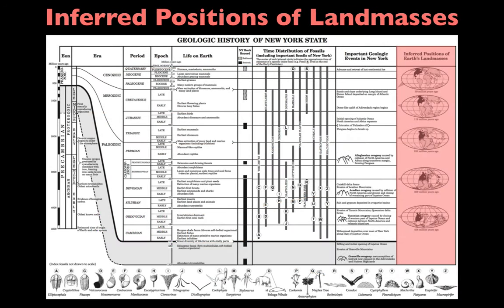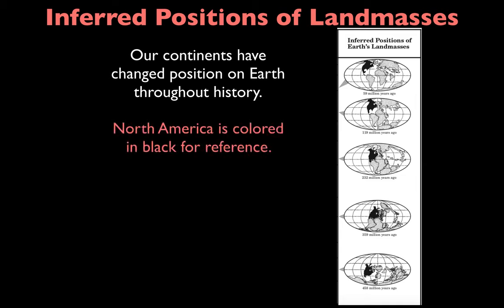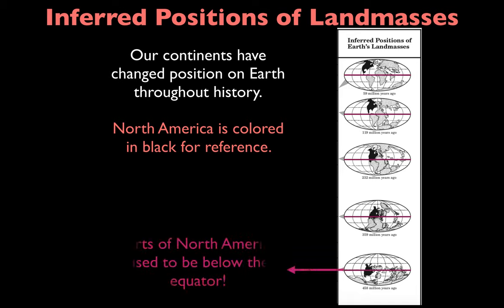Another part of the reference table shows the inferred positions of land masses. Our continents have changed position on Earth throughout history — the continents do not stay in one spot. North America is colored in black for reference, and the equator is highlighted so you can see where North America is located relative to it. Looking at the diagram at the bottom, parts of North America used to be below the equator — even in the southern hemisphere.